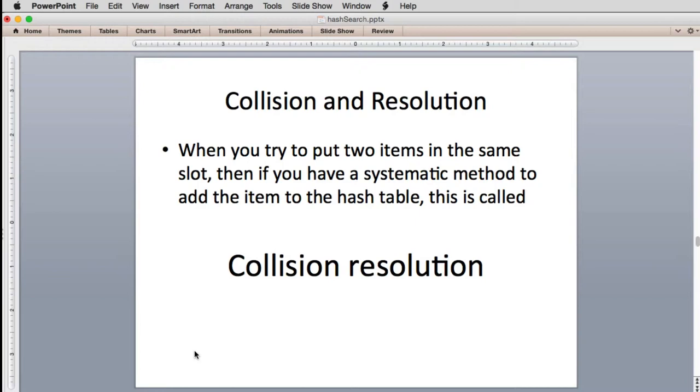Google certainly doesn't know what website someone's going to write, so they can't make a perfect hash for all websites. If they were just going to hash like the first 1 million websites, they could design a perfect hash, as long as nobody changed those websites. So we're going to look at how to put two items in the same slot. We need to have a systematic method to add the item to the hash table. This is called collision resolution.